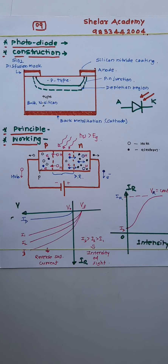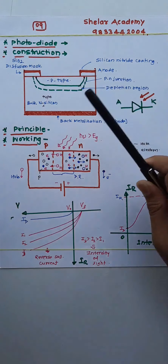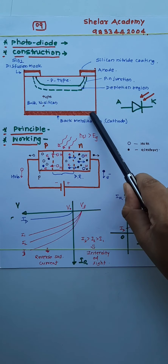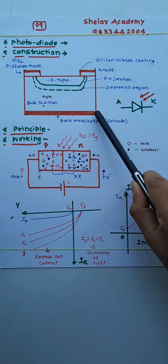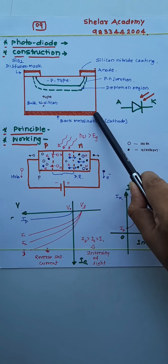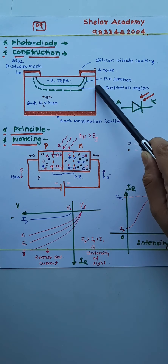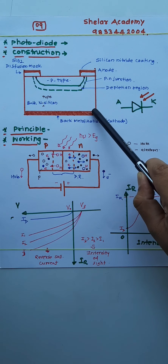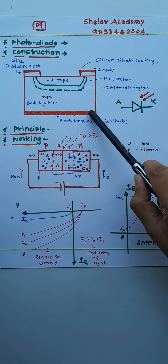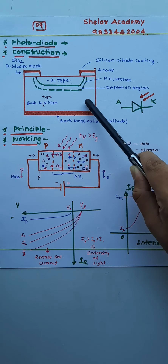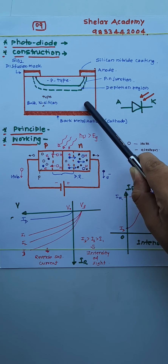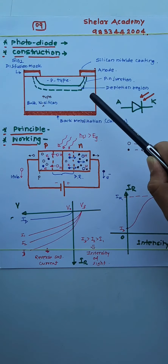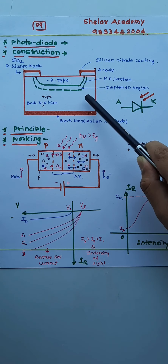Now let us see the construction of this device. In construction, there is a metal base — a metal sheet — which is also called the substrate. On the substrate, pure silicon vapor is grown. It is thick and its purity is very high. This silicon is doped with a pentavalent impurity, so it behaves like an N-type semiconductor region.